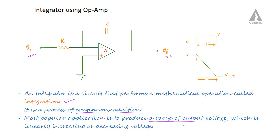The ramp output voltage from an integrator can be linearly increasing or decreasing. Here you can see this is the input voltage Vin and this is our output voltage V0. So when we apply the voltage V, the integrated voltage is obtained at the output. This voltage is linearly decreasing from zero to a particular minus voltage over the time duration. This is our input voltage and this is the corresponding output voltage.